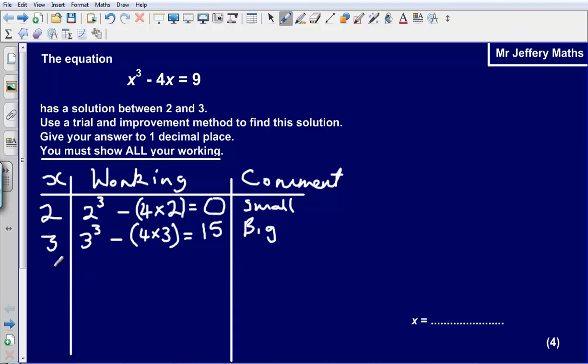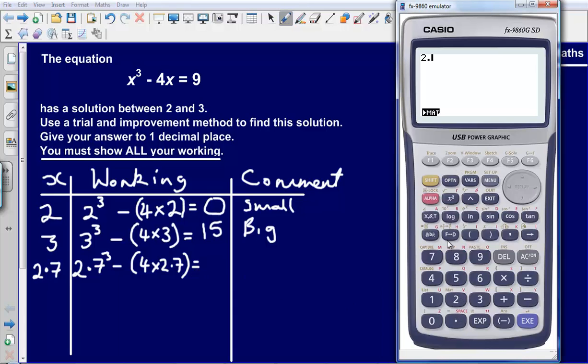So what we now need to do is make a decision about what number we are now going to choose. What I would suggest here is to go for maybe 2.7. I don't know what that is going to come out as, but we will try the number 2.7 because I would say that it looks like it is closer to 3 than it is to 2. So let's substitute 2.7 into this equation. So 2.7 cubed minus 4 times 2.7, and that is going to be equal to, so let's just input that into our calculator.